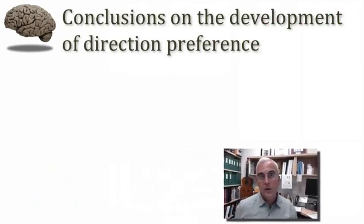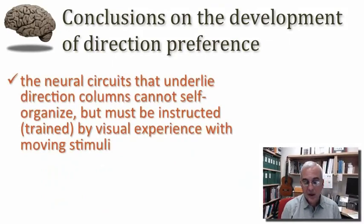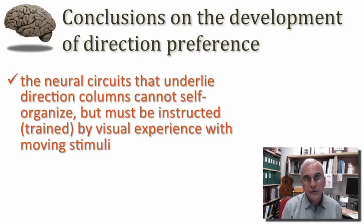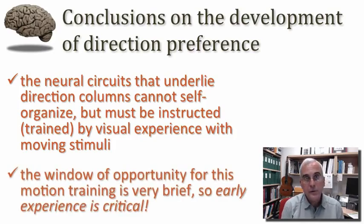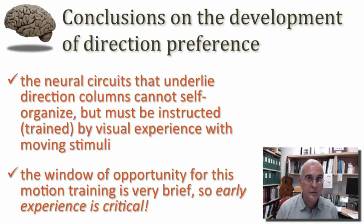What has this taught us about the role of visual experience in the development of direction preference? The neural circuits that underlie direction columns don't seem to have the capacity to self-organize the way that circuits responsible for orientation columns self-organize. Rather, the differentiation of those circuits to compute direction selectivity must be instructed by the presence of a visual stimulus. We've also learned that the window of opportunity for the benefit of this motion training is very brief, meaning that early experience is absolutely critical to avoid lasting impairment in the ability to differentiate directions of visual motion.